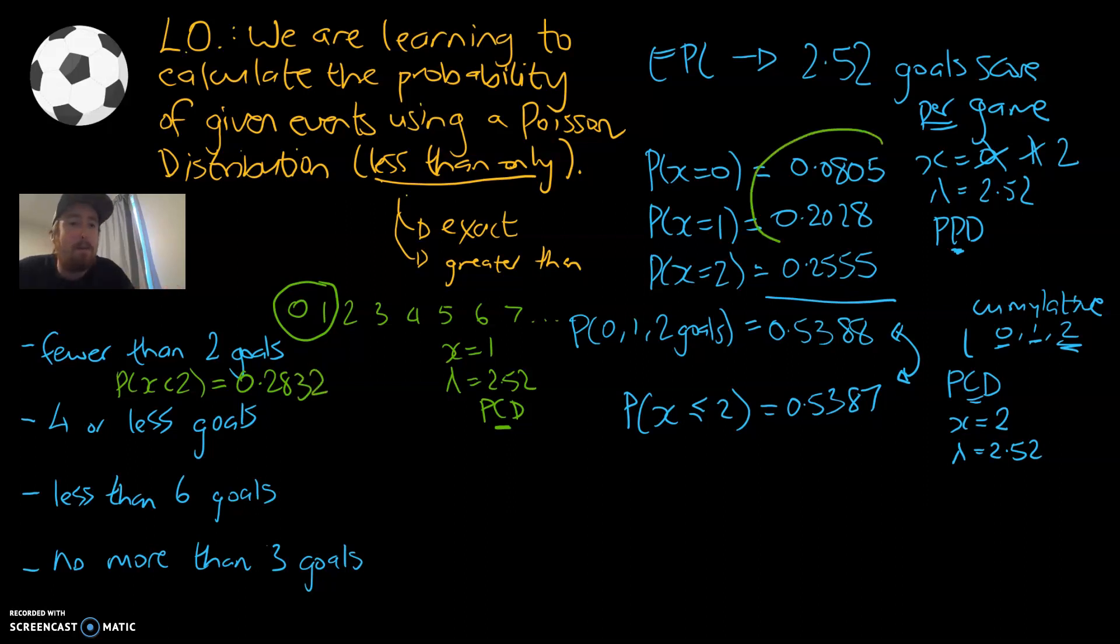If you look back at our previous example, if you add zero and one together, that's about the number that we got. So we're pretty happy with that.